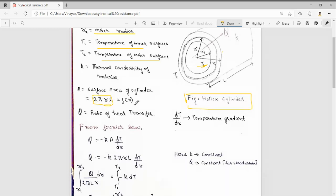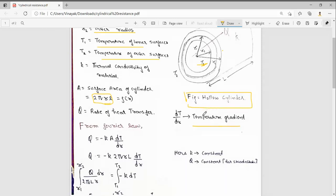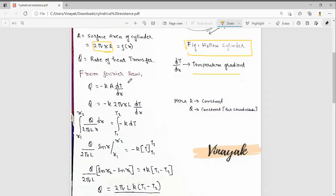dT/dR is the temperature gradient. From Fourier's law we can write Q equals minus K dT/dR. Substitute the value of A, which is 2πRL.